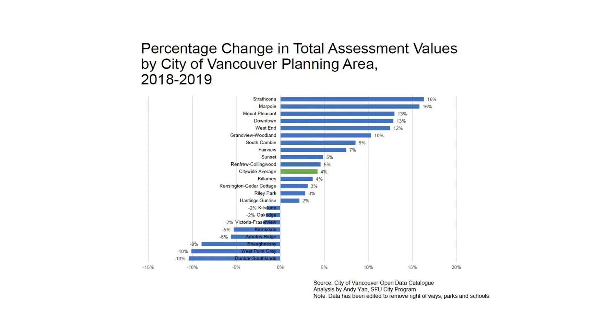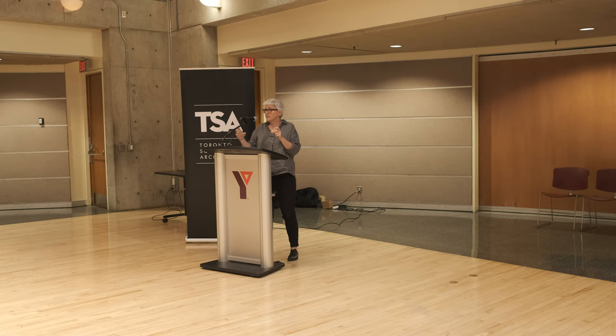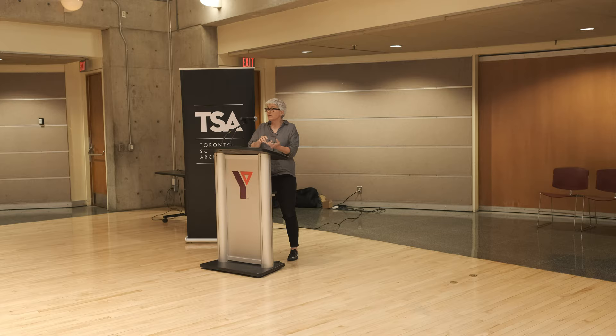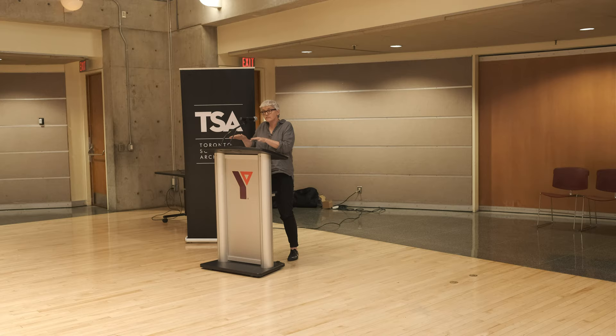This is Andy Yan's work — a planner at Bing Thom's office in Vancouver. He looked at upzoning and its impact on housing prices. In everywhere in Vancouver where they've done character-based upzoning, prices have increased. But in this one neighbourhood where they rewrote zoning to actually produce housing for young families and allow aging in place, the cost has stayed in line with Vancouver's broader housing prices — which is not affordable due to other market issues, but interestingly it hasn't tripled like the character-based neighbourhoods.